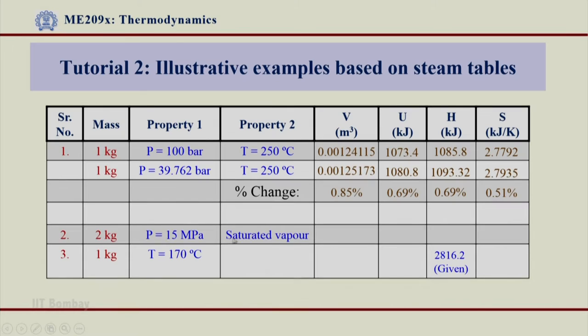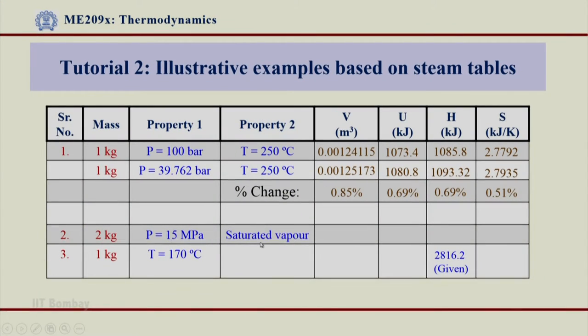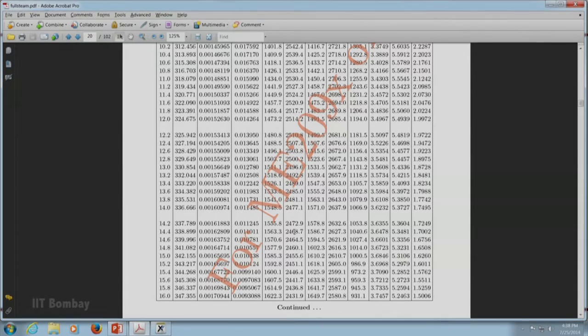It is important to realize that the moment I say saturated vapor or saturated liquid, I will have to go to Vg or Vf respectively. So let us go to table number 2 where at 15 MPa we can trace and get the values of Vg, Ug, Hg, and Sg. Those values will be per kg, and since we have 2 kg, we will multiply those values by 2.